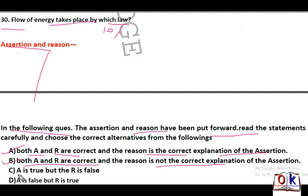If assertion is true but reason is false, answer will be C. If assertion is false but reason is true, answer will be D. So based on each statement, you need to give answers A, B, C, or D.